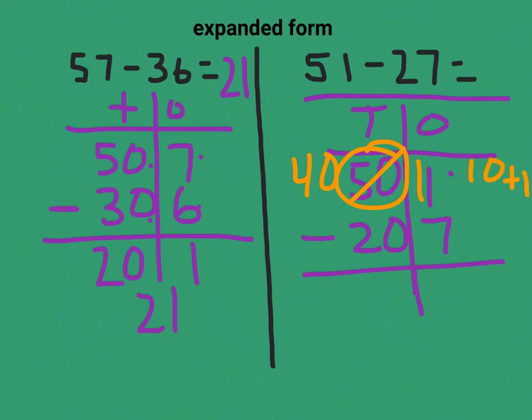So 11 take away 7, I can do that. That's 4. 40 minus 20 is 20. So my new answer is 24.